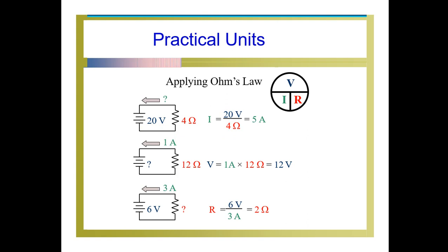In the second circuit, current is given as 1 Ampere and resistance is 12 Ohm, and we want to find out the voltage applied. We use the equation V equal to I times R. Substituting I and R values, we get the voltage value as 12V.